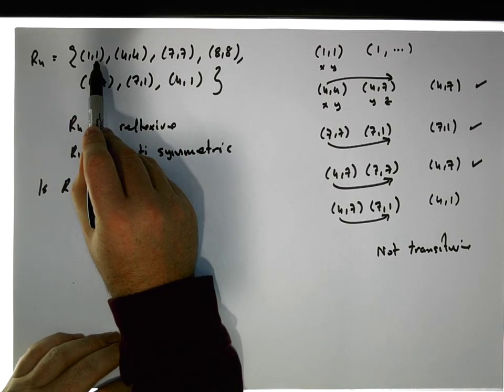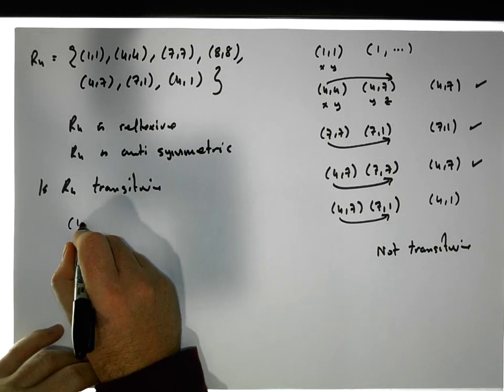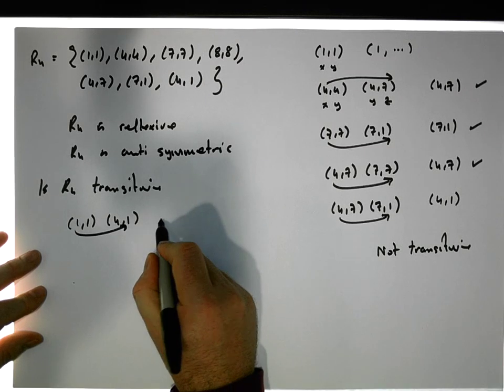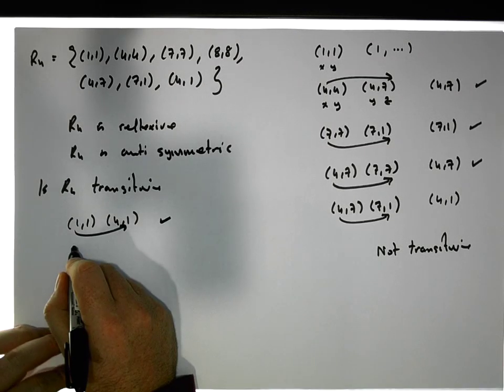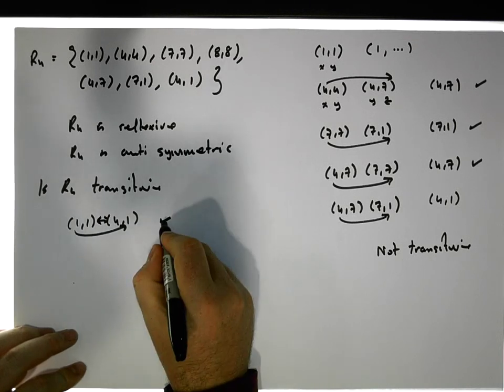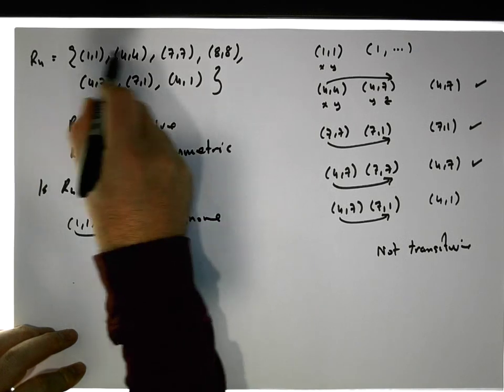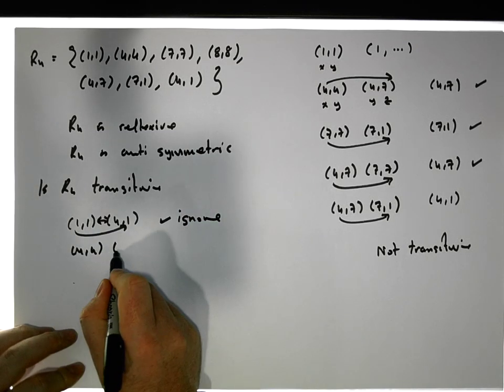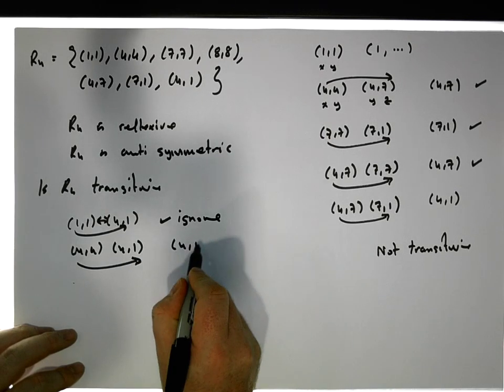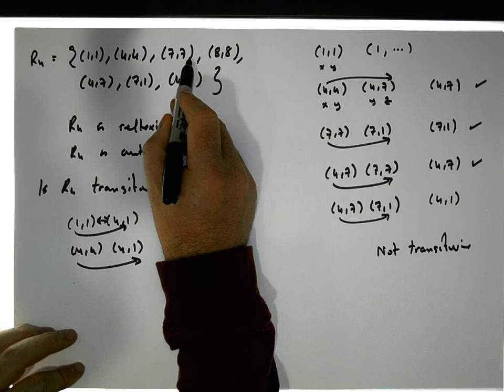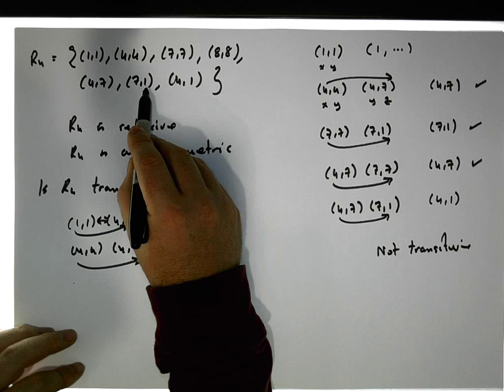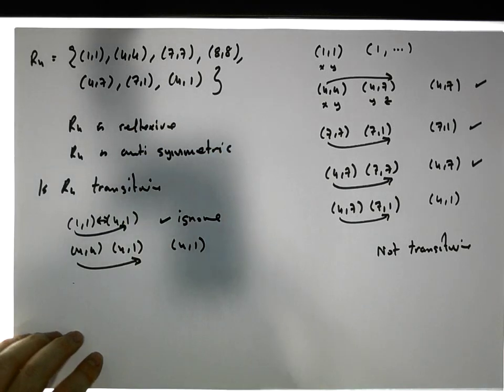So one, one to four, one. Let's try that. If this is transitive, we should be able to go from one to one, which we can do. Actually, we don't need to consider these, because these two values here are different. So actually ignore that. So four, four to four, one. You can see that here, if it is transitive, we'd have to be able to go from four to one, which we can do. Seven, seven and four, one, no. Eight, eight and four, one, no. Four, seven and four, one, no. Seven, one and four, one, no. None of them are required. They don't match up.